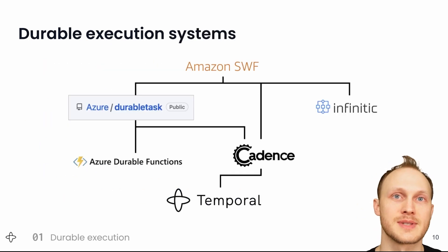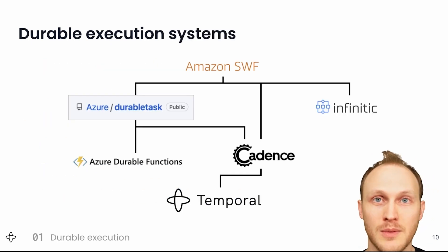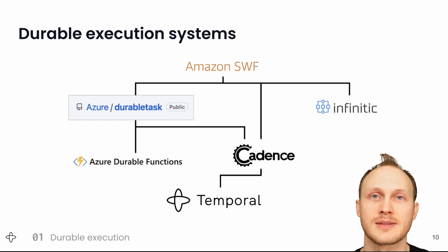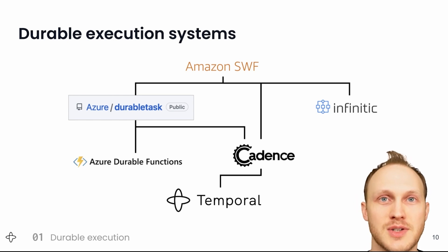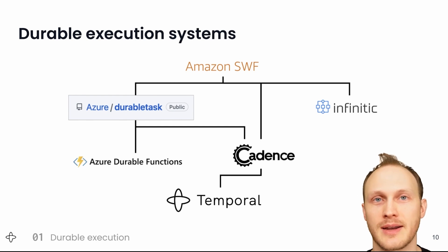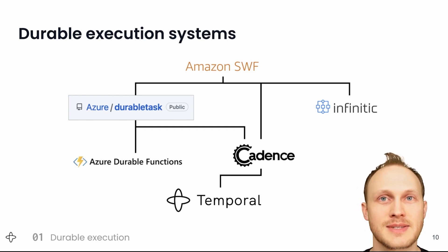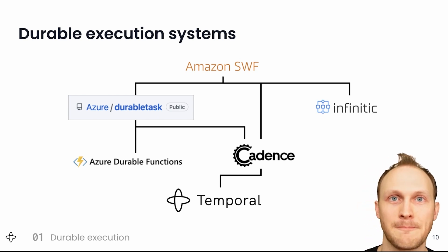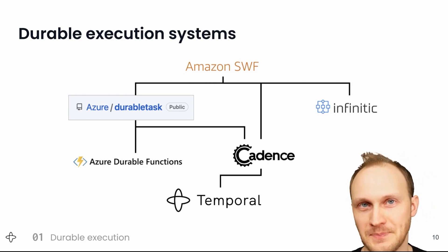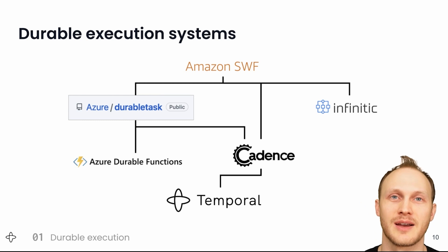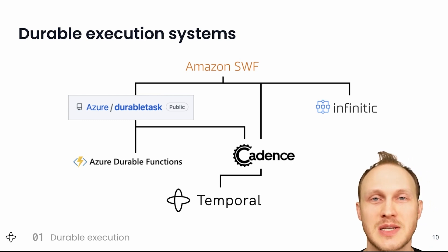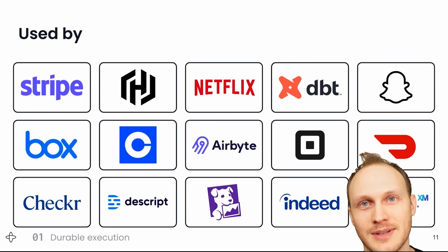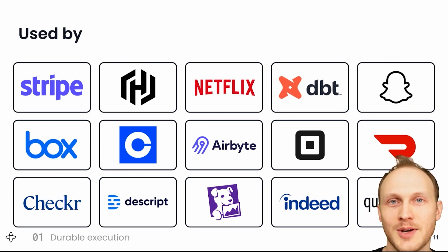Here are the systems that support durable execution. At the bottom is Temporal, where I work. Our co-founders, Maxime and Samer, launched AWS Simple Workflow Service in 2012, and Samer went on to Microsoft and built Azure Durable Task Framework, which became so popular that it was adopted by Azure Durable Functions. Samer and Maxime got back together at Uber, where they created Cadence in 2016, which is used by Uber Engineering for hundreds of use cases and was adopted by a number of other companies. They left Uber in 2019 to create Temporal, which is a fork of Cadence that now has a team of 130 people working on it. Here are some companies that use Temporal, including Stripe, Netflix, Snap, Box, Coinbase, and Datadog.